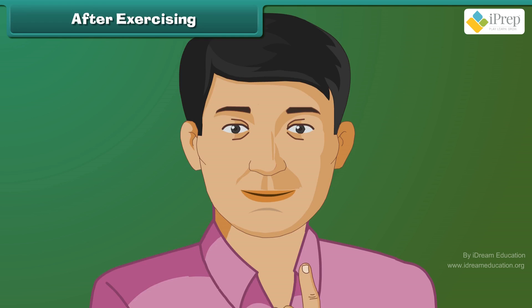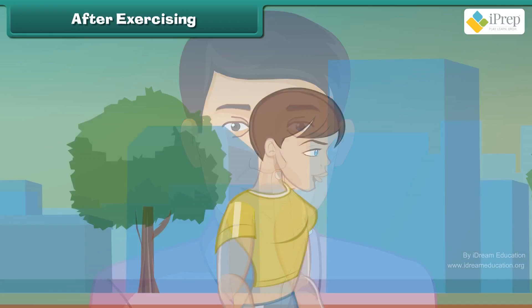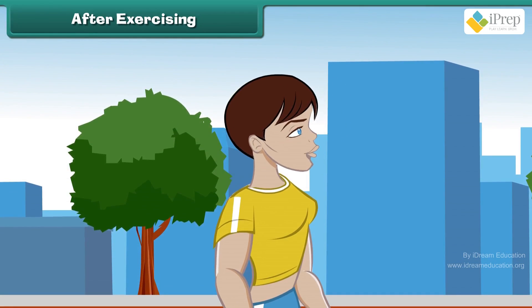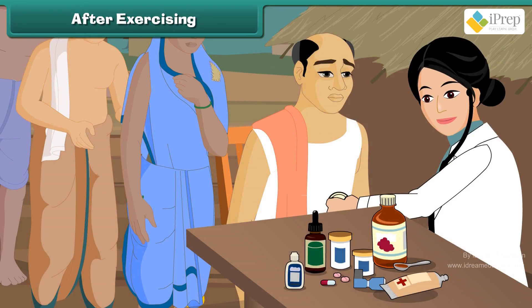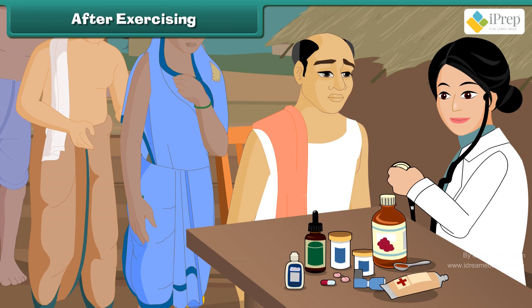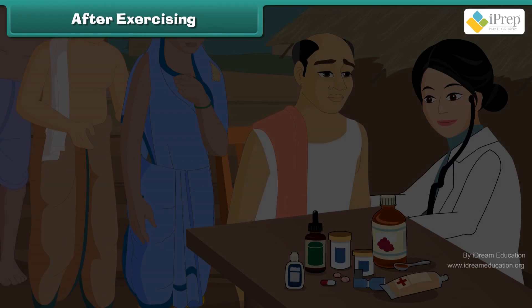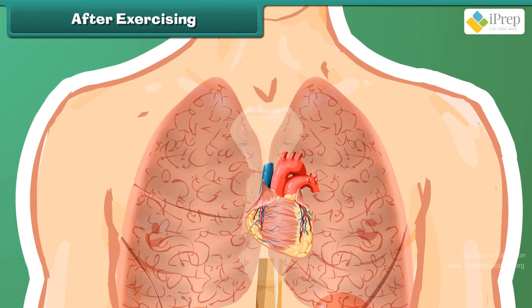If you put your finger under your nose, you can feel air when you breathe out. If you jump and then count the number of breaths in and out, it increases. A doctor using a stethoscope hears the heartbeat — the sound that comes from our heart. The heart is an organ that lies on the left side of the chest and beats continuously.